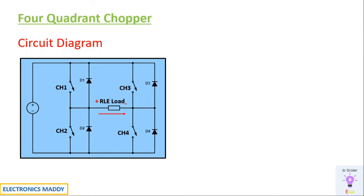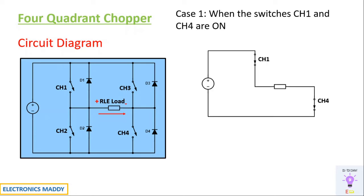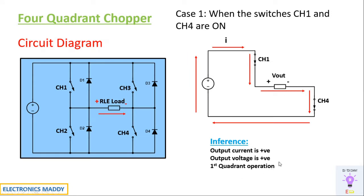Let us analyze each of the cases. When switches CH1 and CH4 are turned on, the circuit has CH1 triggered and CH4 triggered. Current starts flowing from the DC supply through the load, and the inductor in the RLE load starts charging with a polarity plus and minus. The inductor plays a very important role during charging and discharging. The output polarity will be Vout. Current flows through the load and returns. The current flows in the same direction as our convention, and the voltage polarity is also plus and minus. So it is operating in the first quadrant — output current is positive, output voltage is positive.